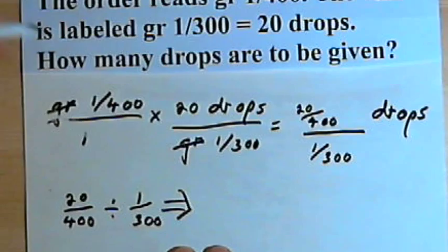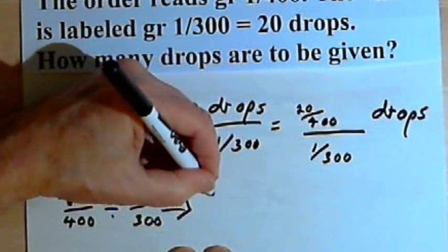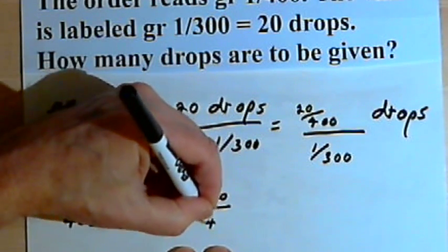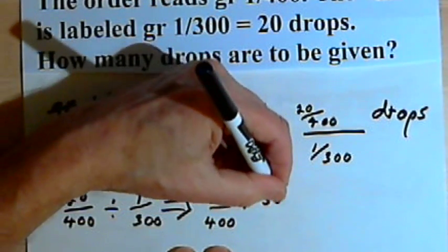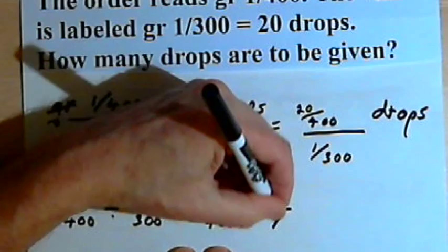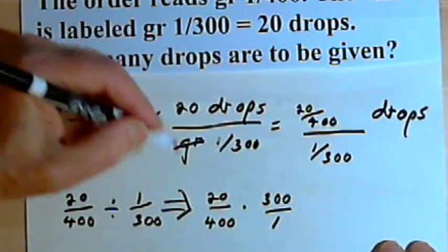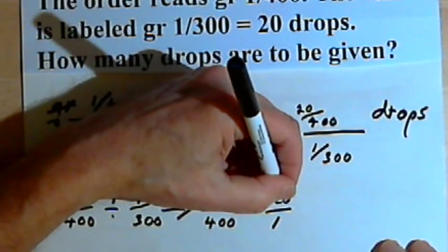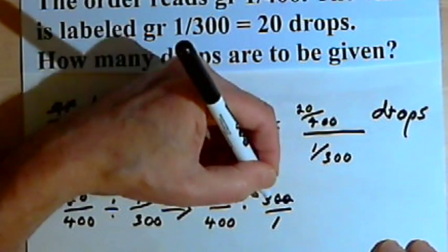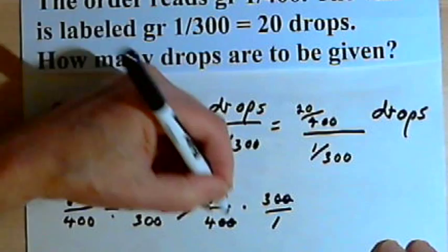We'll turn that into a multiplication problem, 20 over 400 times 300 over 1. Since I've got 300 and 400, I'm going to cancel out the hundreds. So I'll just make the 300 into a 3 and the 400 into a 4.